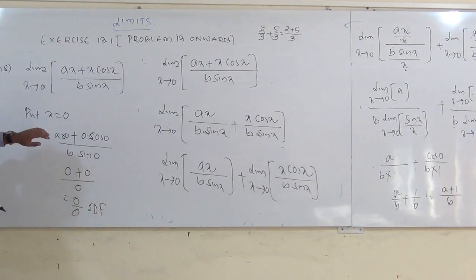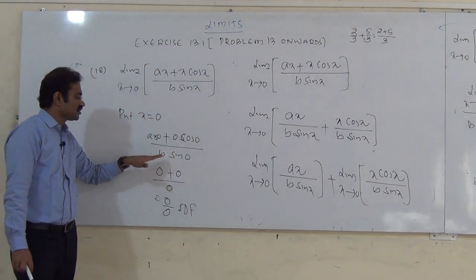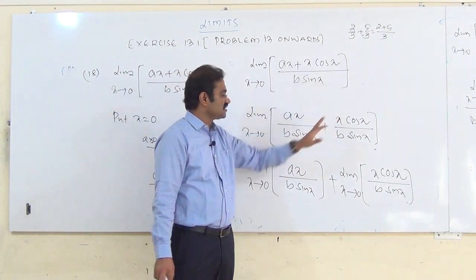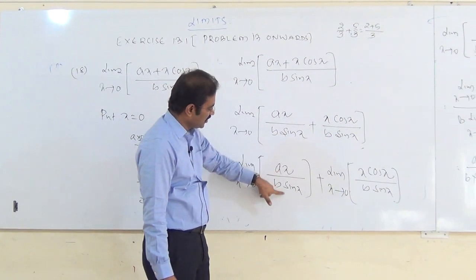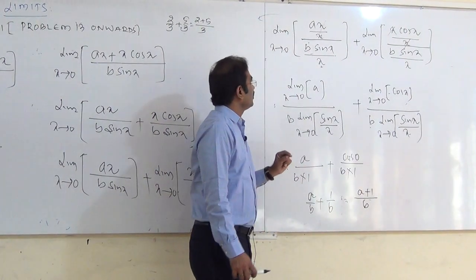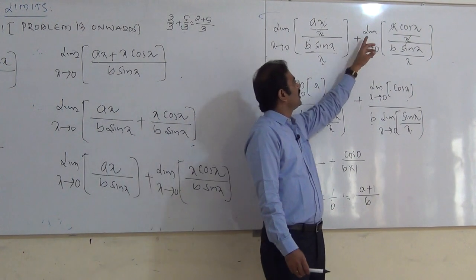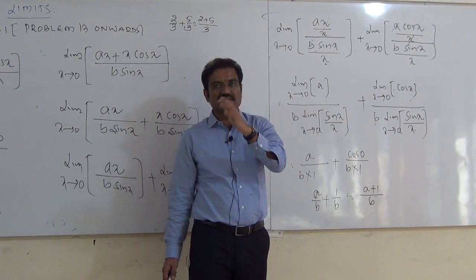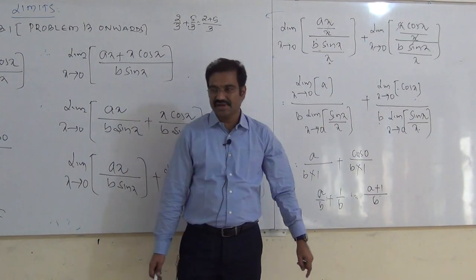Or writing with LCM b: (a + 1)/b. So the answer is (a + 1)/b. Recap: put x = 0 gives 0/0 — IDF. Split the fraction, divide each part by x, apply limits: sin x/x → 1, cos(0) = 1, so a/b + 1/b = (a+1)/b.